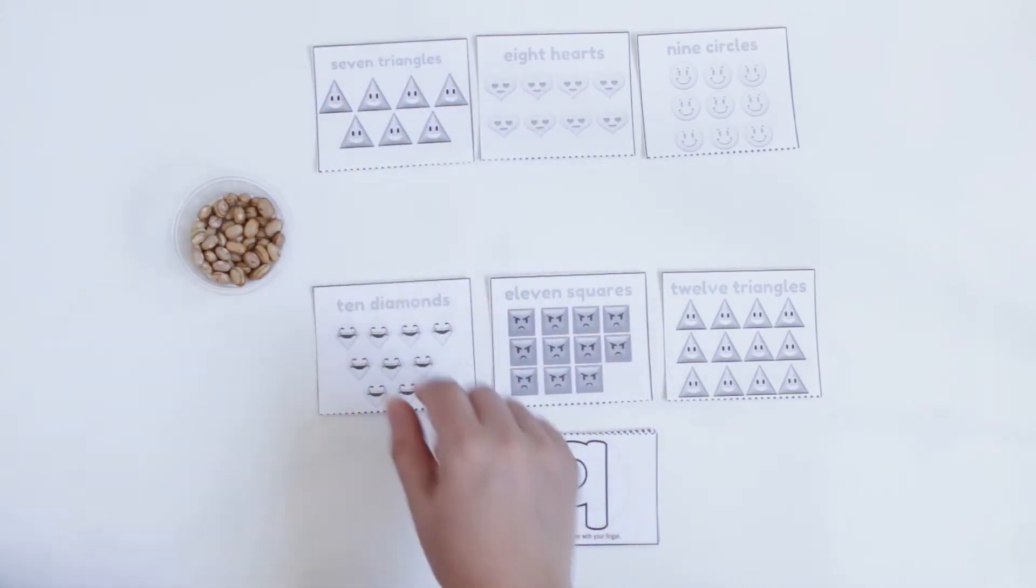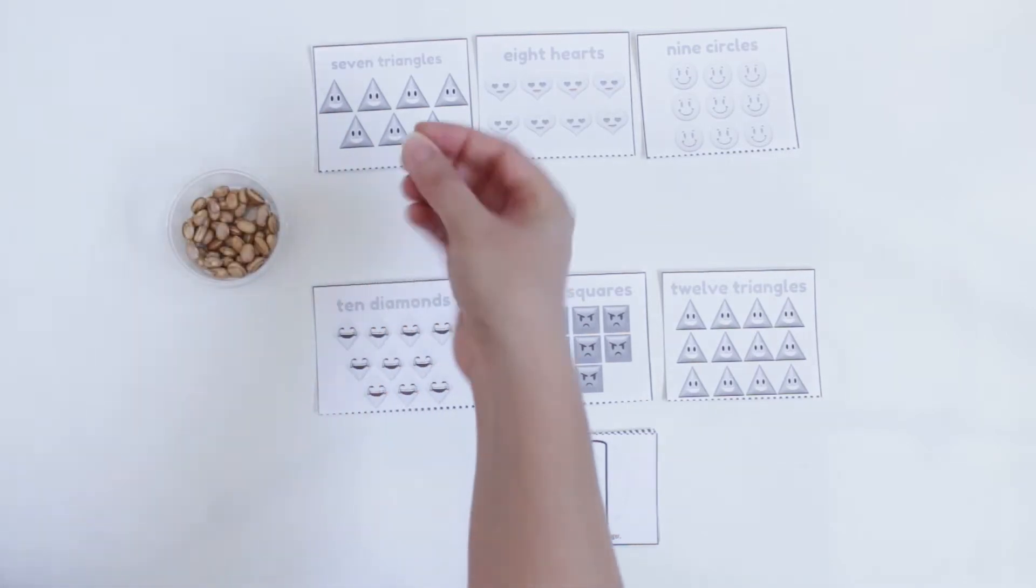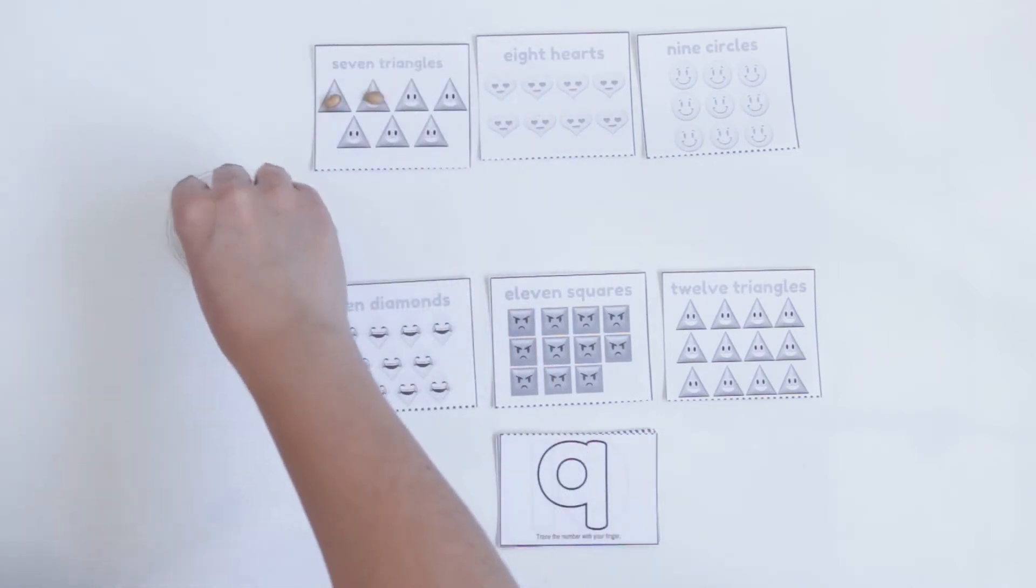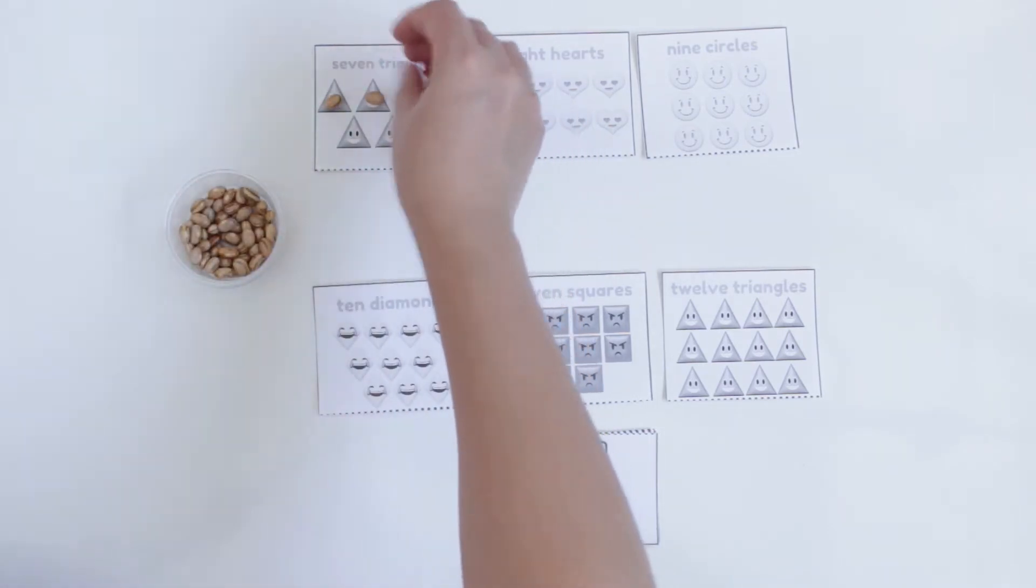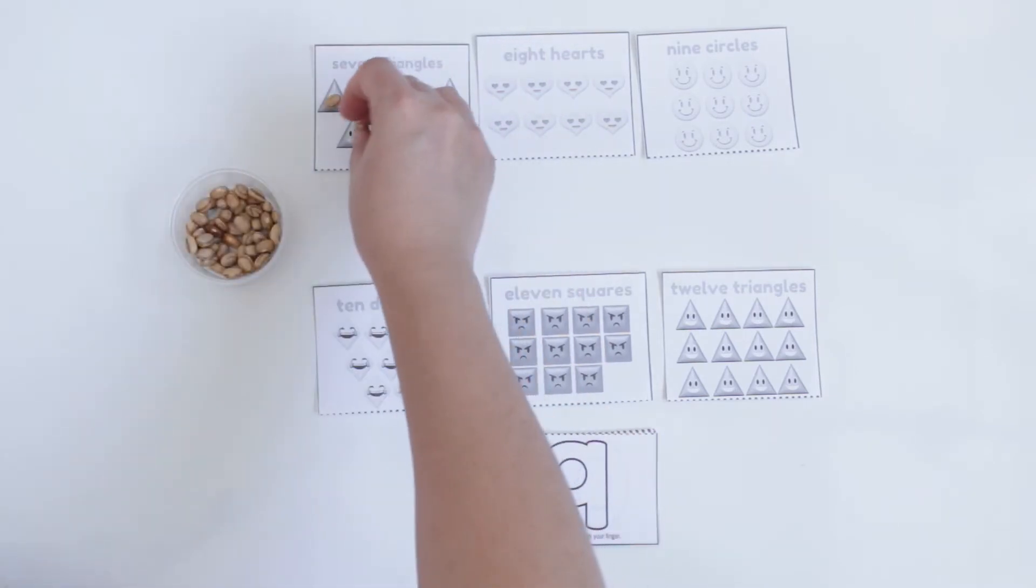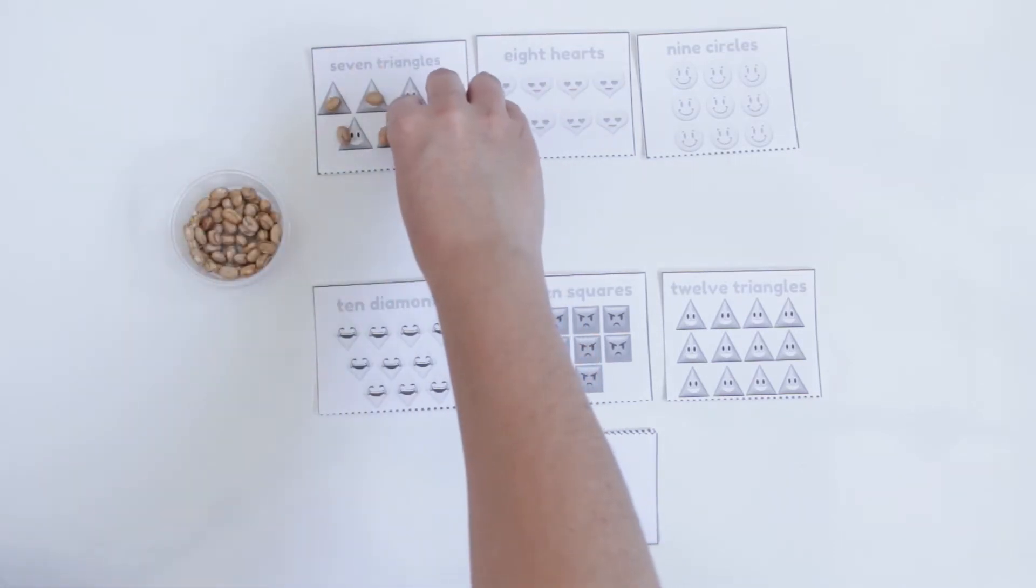How many triangles do I have? So they can count with the objects: 1, 2, 3, 4, 5, 6, and 7.